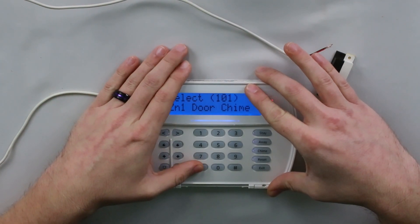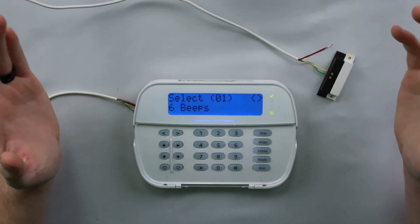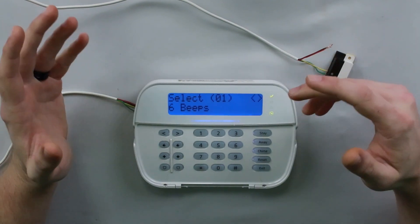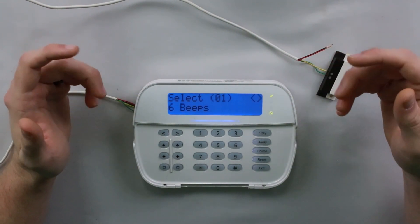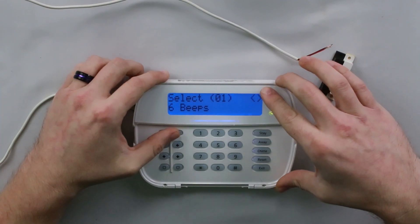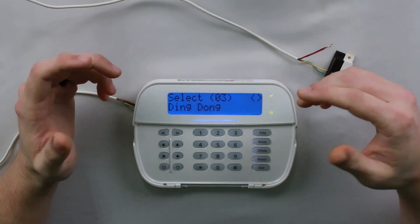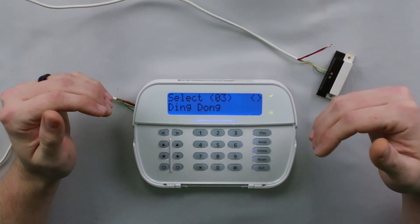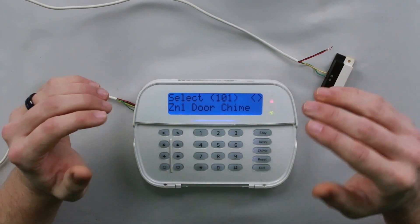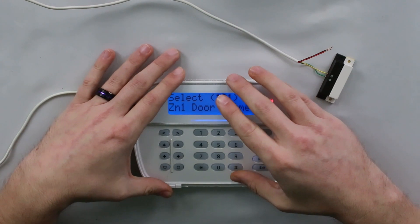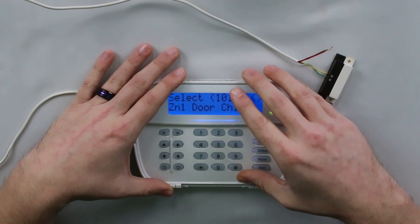As you continue scrolling, it will show you each individual zone door chime options. So pick the zone that you're trying to adjust. If you need to adjust all of them, you will have to do them all individually. That is just because it wants you to be able to personalize it to whatever you want. We're going to go to zone one door chime, because that is what this zone is. And the default is option one, which is six beeps. You guys heard that a few minutes ago. That's the chime that selects for standard doors.